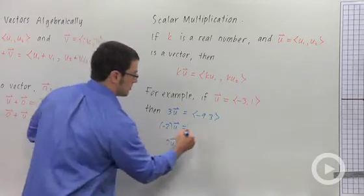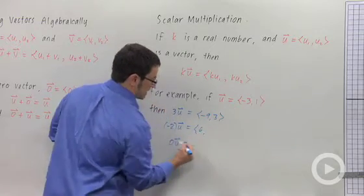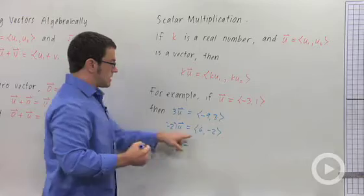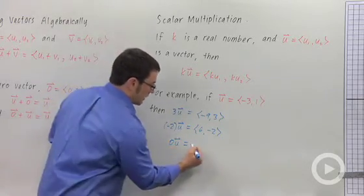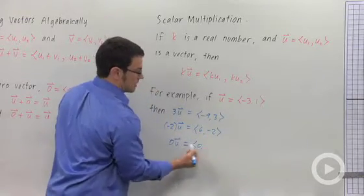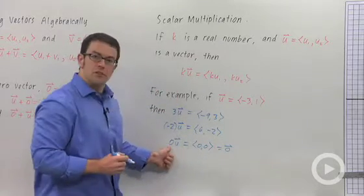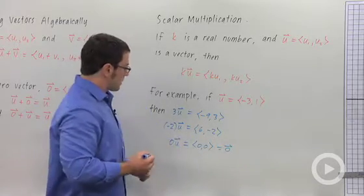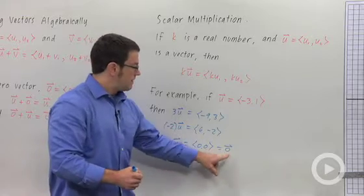Negative 2 times u, I'd multiply negative 2 times negative 3, and I'd get 6. Negative 2 times 1, negative 2, 6, negative 2. And 0, the scalar 0 times vector u is going to be 0 times negative 3, 0, and 0 times 1, 0. And that, of course, is the 0 vector. So the scalar 0 times any vector gives you the 0 vector. Just keep in mind that these two 0s are different. This is the real number 0, and that's the vector 0.